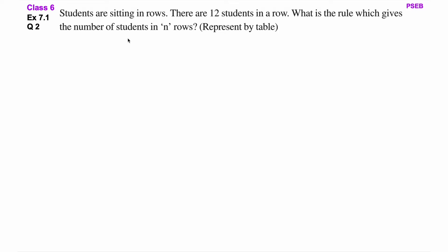What is the rule which gives the number of students in n rows? Here we have n used. N is one letter — we are talking about letters in numbers. This is a variable. So we have n variable used to write a generic rule.